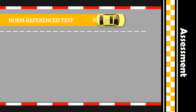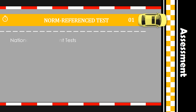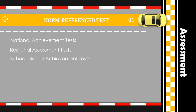Number one is norm reference test. The national achievement test, the regional assessment test, and the school-based achievement test are examples of norm reference tests. These assessment tests are all designed to measure how many of the skills in each learning area — English, Filipino, Mathematics, Science, and Makabayan — have been learned or mastered. Students with learning disabilities manifest deficits in the expected number of skills for mastery in a particular grade level.